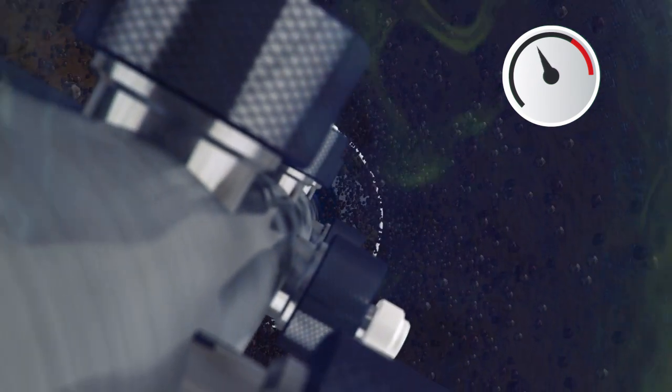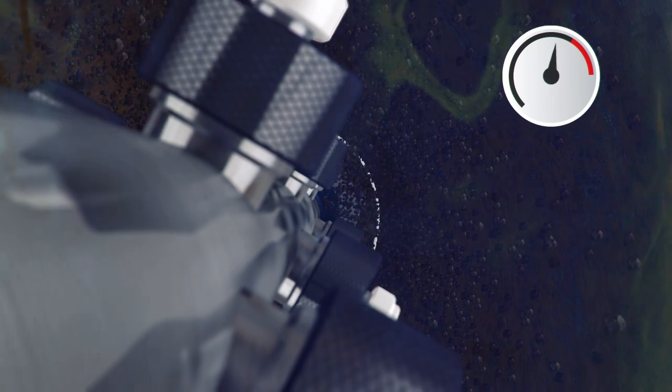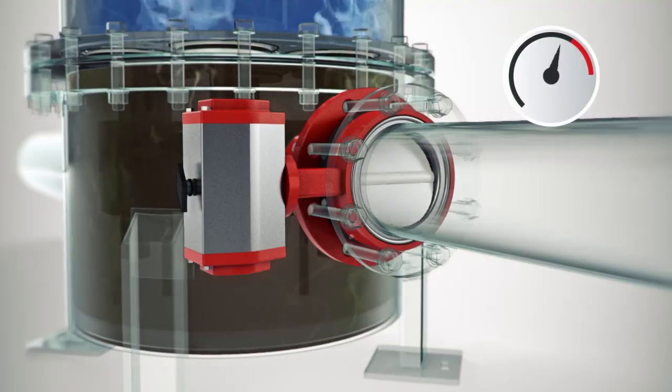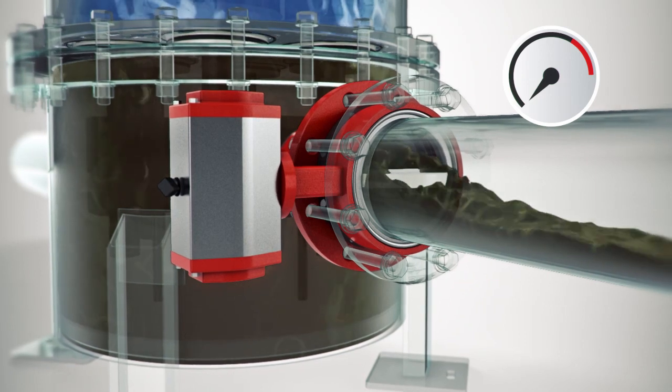Once the differential pressure reaches a preset level, the system activates its self-cleaning cycle by opening the flushing valve and by starting the motor.